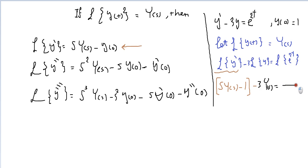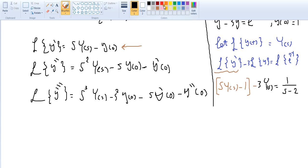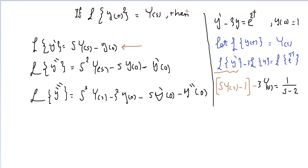Laplace of e^(2t), which we covered in previous videos, equals 1/(s − 2). Now collect terms: take Y(s) as a common factor on the left side, giving Y(s)·(s − 3), and then you're left with minus 1 on the left.